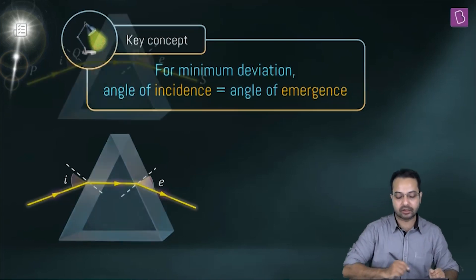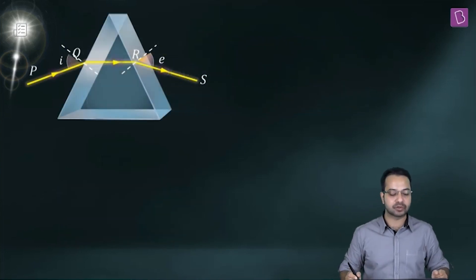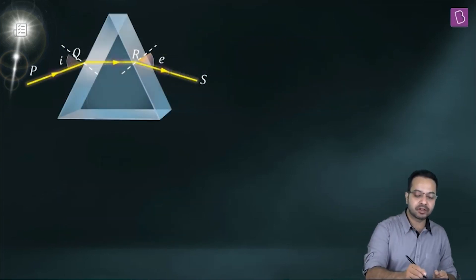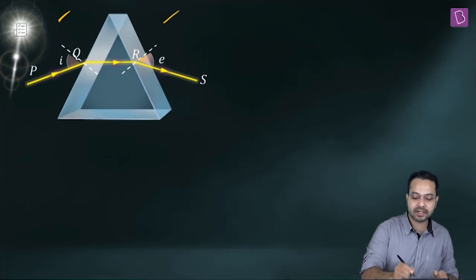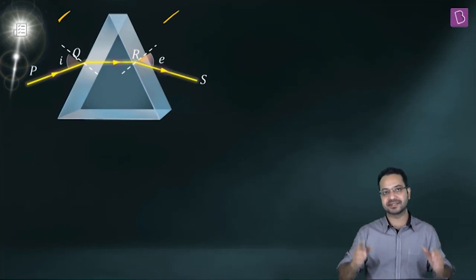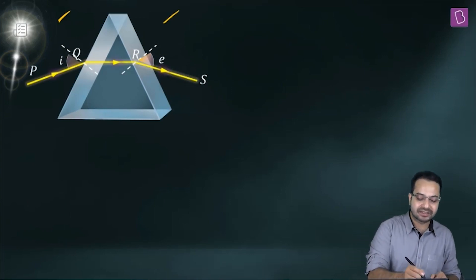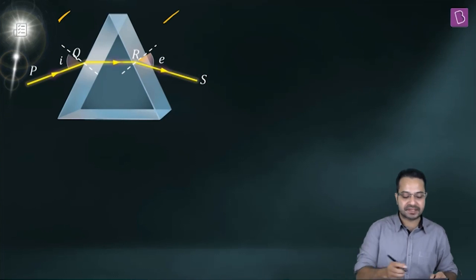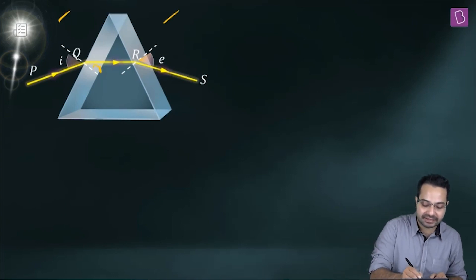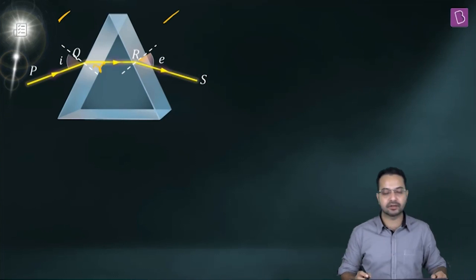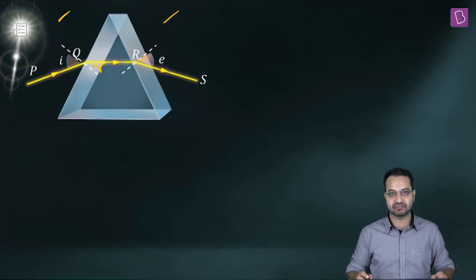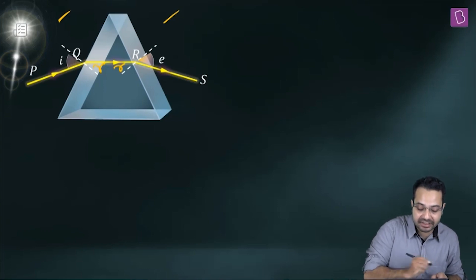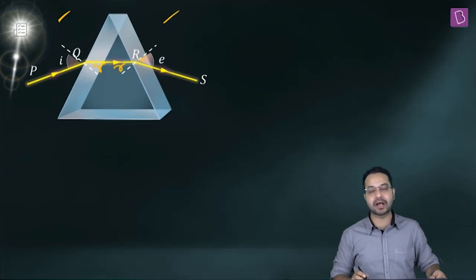Using this underlying concept, let's see how to solve the question. The medium surrounding the prism is the same. So if this is i — the angle of incidence — and this R is the angle of refraction, then the refraction angle on the other side is also going to be R.